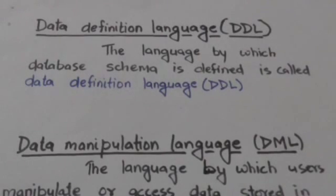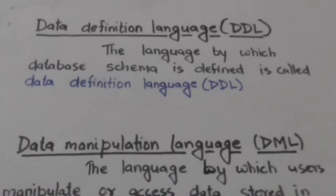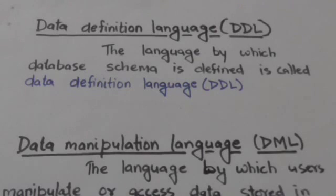Storage structure and access methods used by the database system are specified by a special type of DDL called Data Storage and Definition Language.